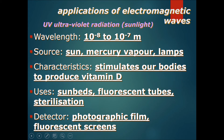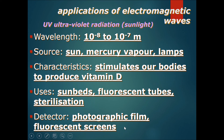The sources of UV radiation are the sun, mercury vapor lamps. A key characteristic is that UV can stimulate our bodies to produce vitamin D, so you shouldn't avoid sunlight entirely — sunlight is the best stimulant for producing this essential vitamin. Uses of UV radiation include sun beds, which use fluorescent lights to produce artificial tanning, as well as fluorescent tubes and sterilization. Detectors are photographic film and fluorescent screens.